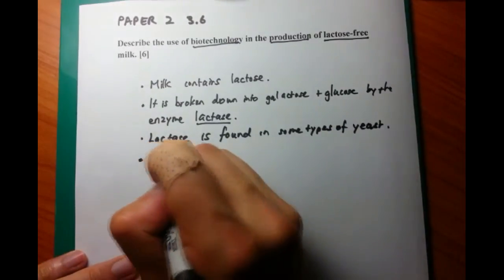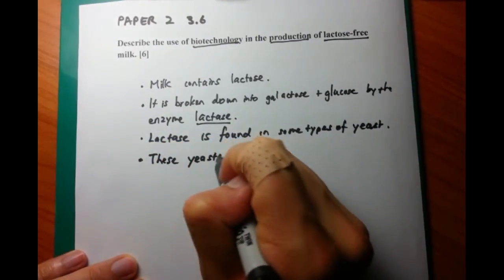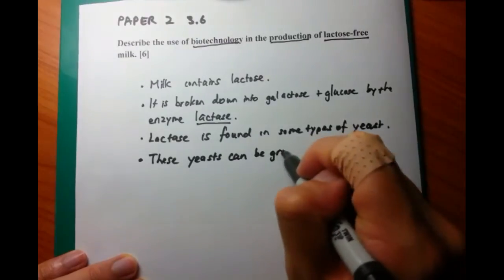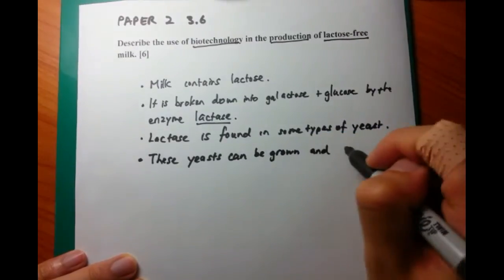Now lactase, the enzyme which is breaking down lactose, can be found in certain types of yeast. That's the origin of where the lactase is going to be.